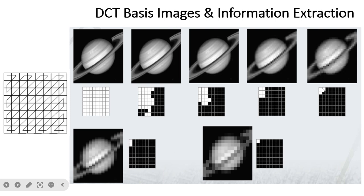As we include more components — those carrying mostly low-frequency information — the reconstructed image improves progressively. Taking six components gives an image similar to the original. We use zigzag ordering so that the components capturing maximum image information are picked first. Even if we discard the remaining components using lossy compression — keeping, say, only some out of 64 — we still get a good approximation of the image.